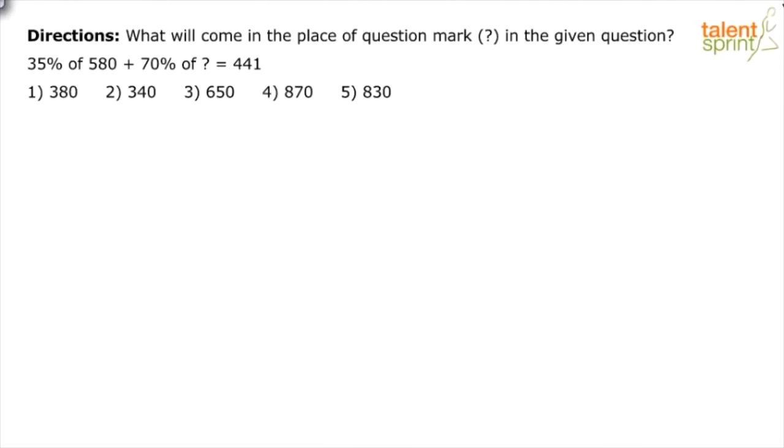So let me quickly share the screen again, present the questions to you and see how we solve such questions in the exam. Now try this out. This is actually one of the previous year's questions. The question says 35% of 580 plus 70% of what equals 441. I'll give you about a minute to try this out and then discuss it.